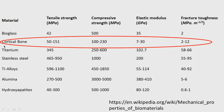This is an interesting table comparing different materials with bone. As you can see, bioglass tensile strength is comparable to the bone; elastic modulus is also comparable; fracture toughness is poor; compressive strength is very very high. Alumina: elastic modulus is high, fracture toughness is extremely low. Stainless steel: fracture toughness is high but elastic modulus is very high compared to bone. Titanium is much less than stainless steel, but still has very high elastic modulus compared to cortical bone. This table compares metals as well as ceramics like hydroxyapatite, alumina, and bioglass with bone.